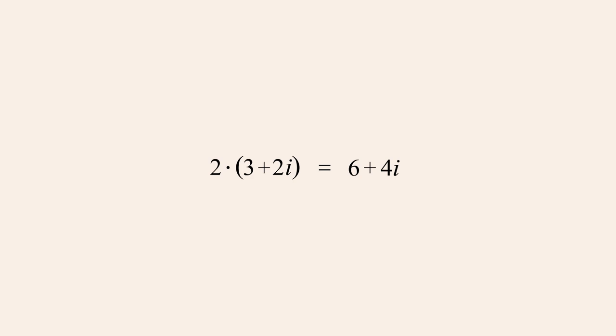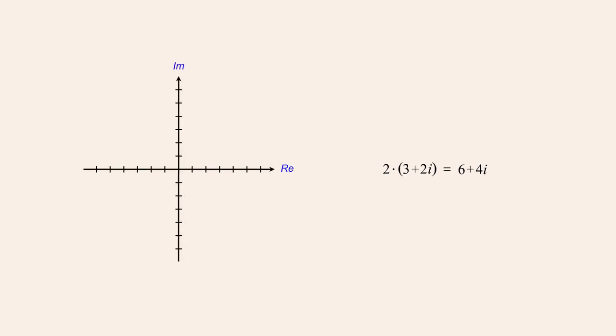This multiplication can be visualized graphically on the complex plane. The complex number 3 plus 2i is represented as a point whose horizontal position is determined by the value of its real part, 3, and whose vertical position is determined by the value of its imaginary part, 2i. We also saw that each complex number can be visualized as a vector, drawn as an arrow extending from the origin to that point. The length of a vector is often referred to as the modulus or absolute value of the complex number.